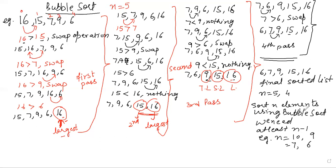That's all for today's lecture. This is how we arrange the data with the help of bubble sort. By default, we arrange the data in ascending order only, but depending upon the requirement, we can arrange the data in descending order also. Thank you so much.